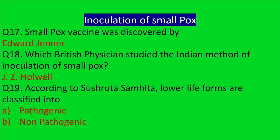According to Sushruta Samhita, lower life forms — meaning microorganisms — are classified into two parts: pathogenic and non-pathogenic. Pathogenic means those which are the main cause of diseases, and non-pathogenic means those which do not cause disease.